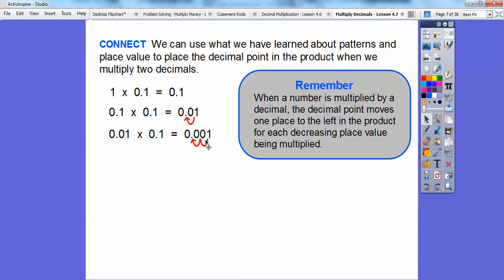This is 0.1 times 0.1. So one times one is one. This is one decimal, this is one decimal. So if it starts right here, move it two places. We'll have a couple examples coming up here.